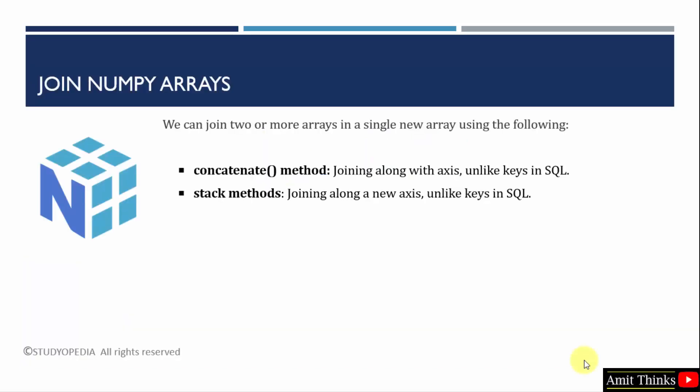To join two or more arrays into a single new array is what we call joining. We can easily join two or more arrays in NumPy into a single array. For that, we have two methods: concatenate as well as stack. To join in SQL, we use keys, but in case of NumPy, we use these two methods.